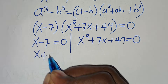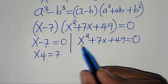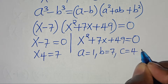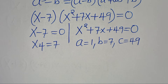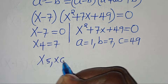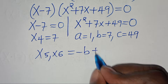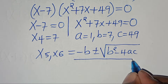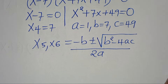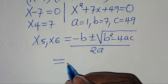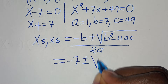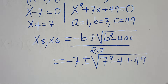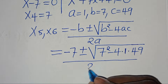So we have that x4 is equal to 7. From the quadratic equation, a is equal to 1, b is equal to 7, and c is equal to 49. We can solve for x5 and x6 by applying the quadratic formula: minus b plus or minus the square root of b squared minus 4ac, everything divided by 2 times a. Substituting the values: minus 7 plus or minus the square root of 7 squared minus 4 times 1 times 49, everything divided by 2 times 1.